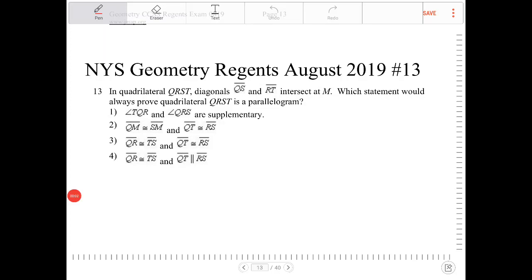In quadrilateral QRST, diagonals QS and RT intersect at M. Which statement would always prove quadrilateral QRST is a parallelogram?